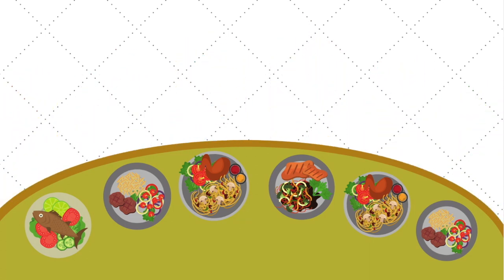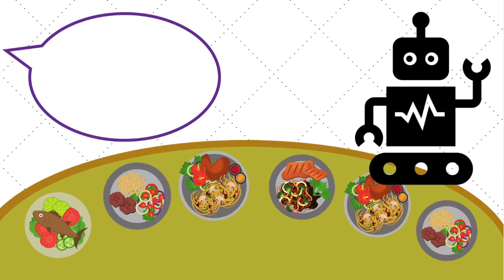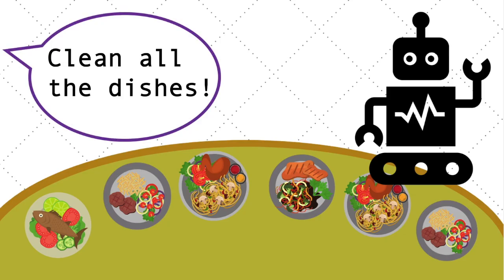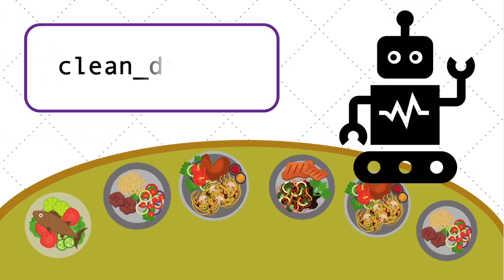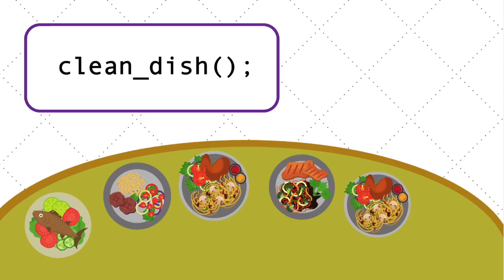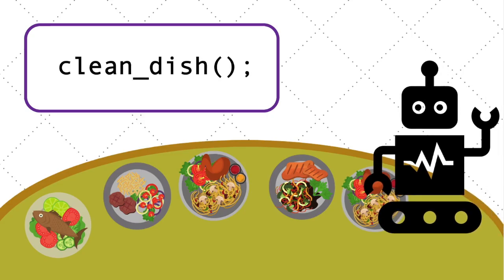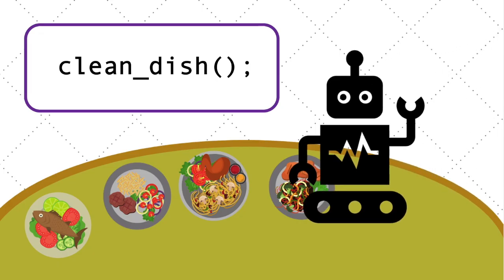Computers require very specific instructions to perform their tasks. So if you wanted to tell your robot friend to do the dishes instead, you couldn't just say "Clean all the dishes." It's not specific enough. If you want a computer to repeat the same action six times, you would need to write six separate lines of code — the same exact instructions over and over and over.